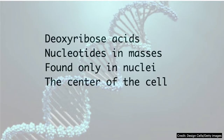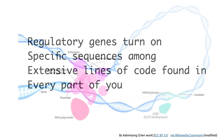Deoxyribose acids, nucleotides in masses, found only in nuclei, the center of the cell. Regulatory genes turn on specific sequences among extensive lines of code found in every part of you.